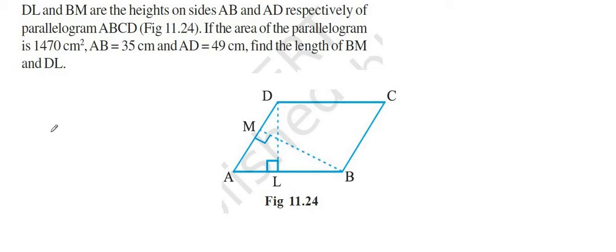Dear student, in this problem ABCD is a parallelogram in which the length of AB is 35 cm and the length of AD is 49 cm, and the area of the parallelogram is 1470 square cm. We have to find the length of BM and DL.